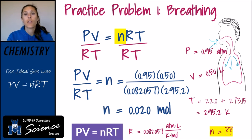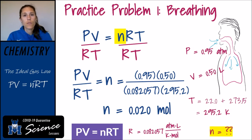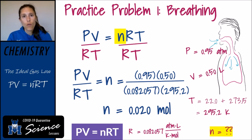Air is a mixture, so that's not the number of moles of oxygen entering — we're dealing with a mixture of primarily nitrogen and oxygen, plus small amounts of carbon dioxide and other gases. That is using the ideal gas law to solve for a single variable when you know the other three variables.